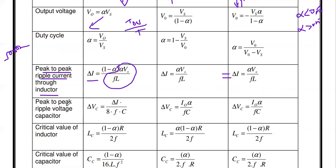The peak-to-peak ripple voltage across the capacitor is ΔVc. For the buck converter: ΔVc = ΔI / (8 × F × C). For the boost converter: ΔVc = I0 × α / (F × C), where I0 is the output current, α is duty cycle, F is frequency, and C is capacitance. This ΔVc formula remains the same for both the boost converter and the buck-boost converter.